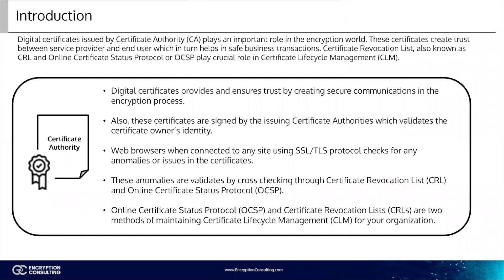Digital certificates issued by CAs — Certificate Authorities — play an important role in the encryption world. These certificates create trust between service providers and end users, which in turn helps in safe business transactions. Certificate Revocation List, also known as CRL, and Online Certificate Status Protocol, or OCSP, play crucial roles in Certificate Lifecycle Management, CLM. Digital certificates provide and ensure trust by creating secure communications in the encryption process. These certificates are signed by the issuing CAs, which validate the certificate owner's identity.